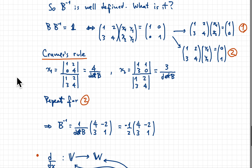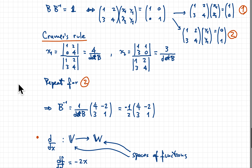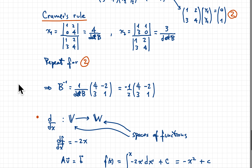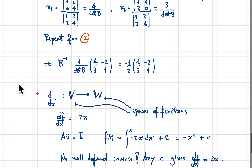You can use Cramer's rule for a 3×3 system as well. Beyond that, it gets very complicated and numerically expensive, since calculating determinants for larger matrices requires a very large number of operations — something to use sparingly.